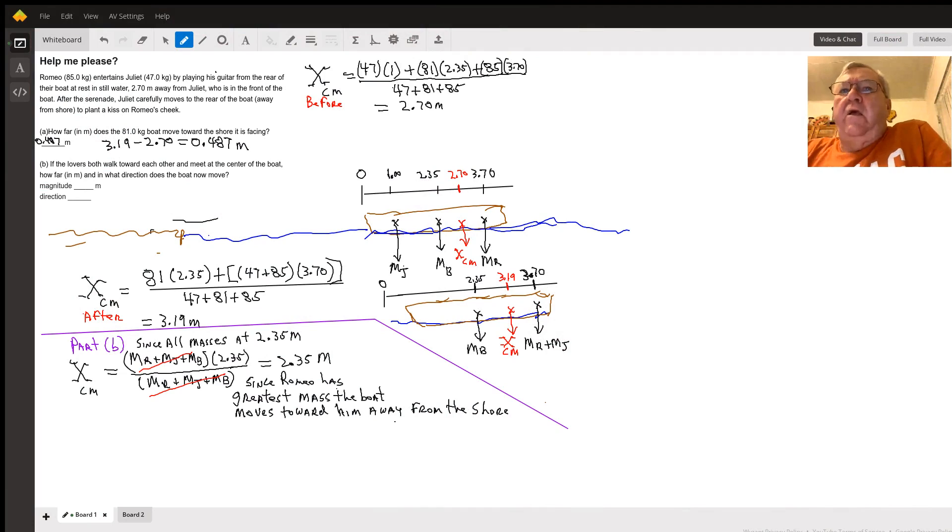This is the classic Romeo and Juliet in the boat problem. It's a center of mass problem, and you need to make a reference point. So I made a reference point one meter in front of Juliet.